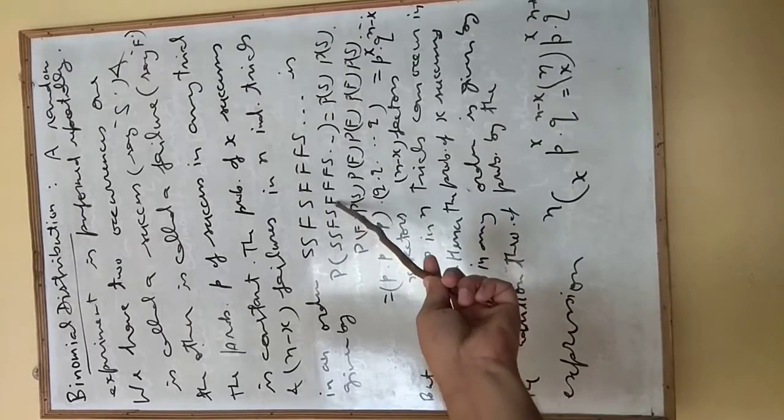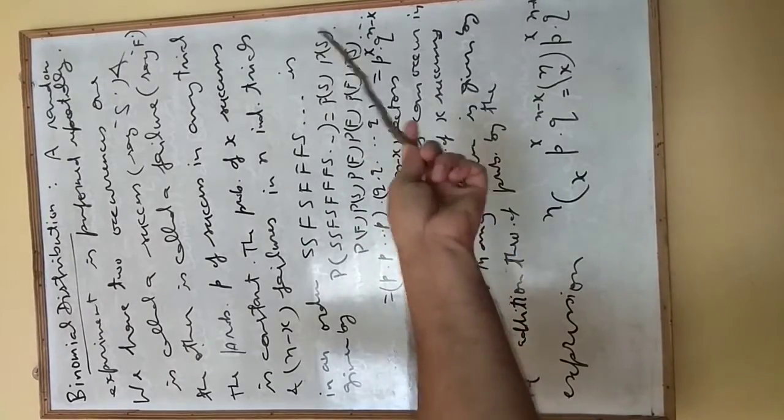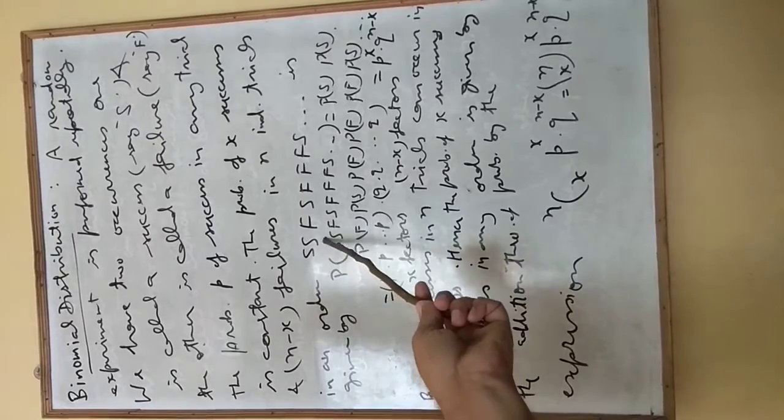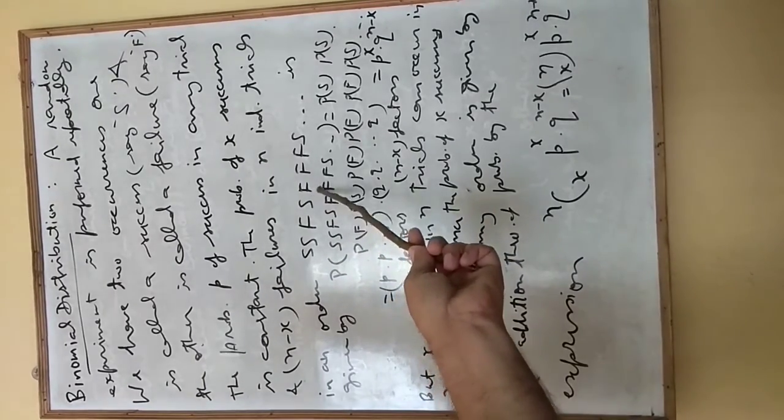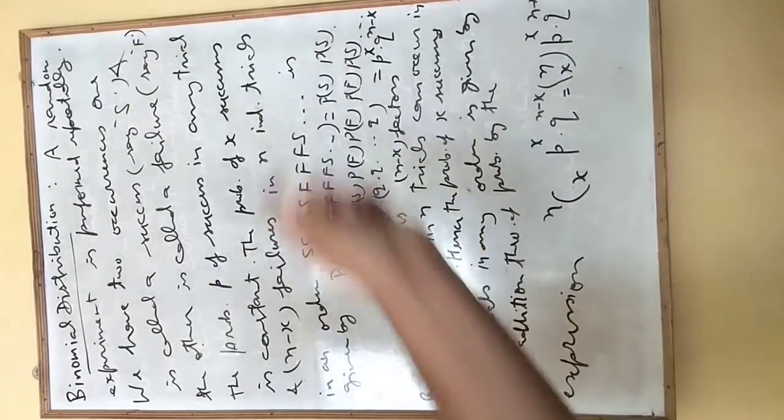Given by probability S, S, F, S, F, F, F, S, and so on. It means first success, second success, then failure, then success, then failure, failure, failure, success.